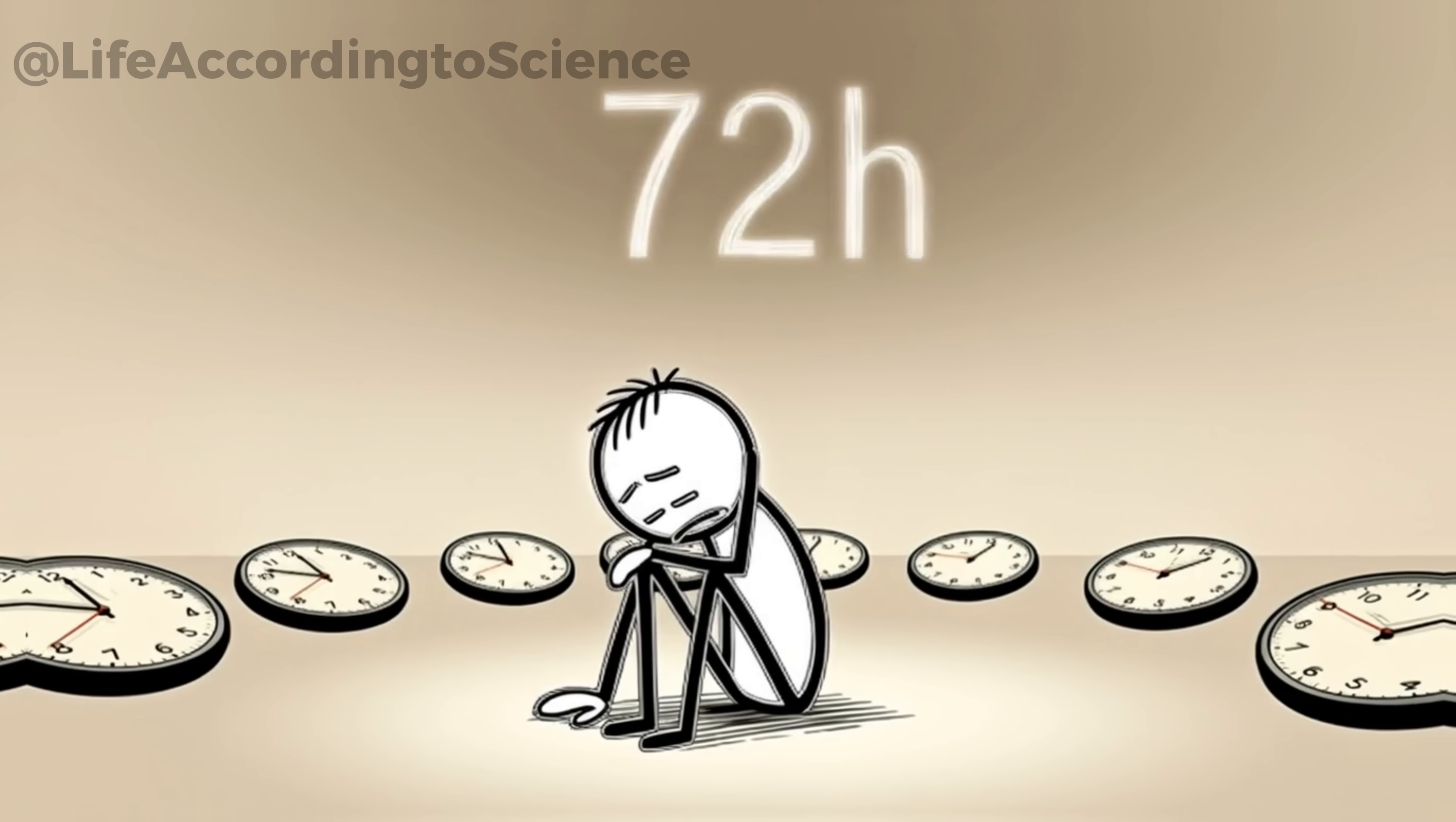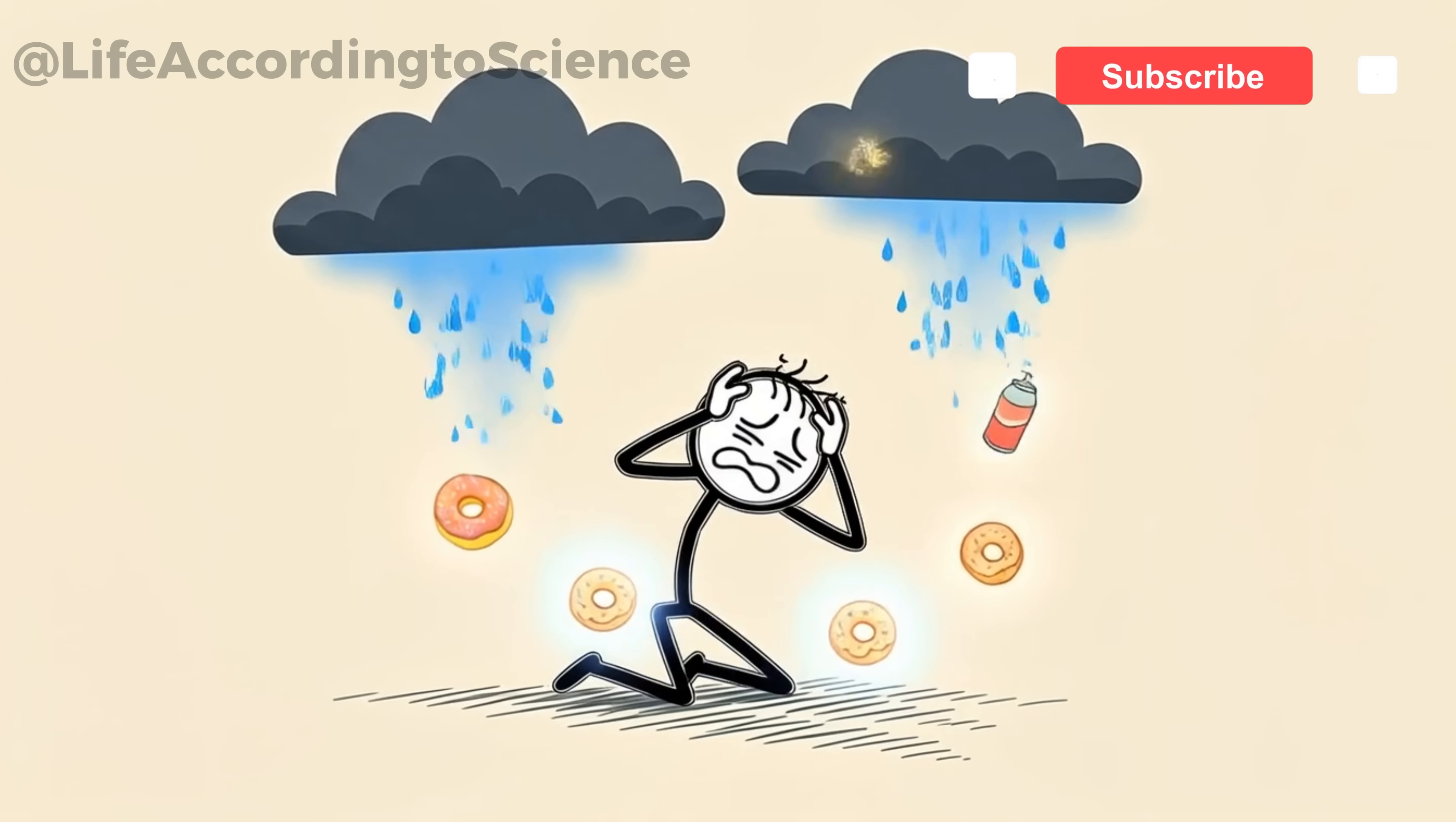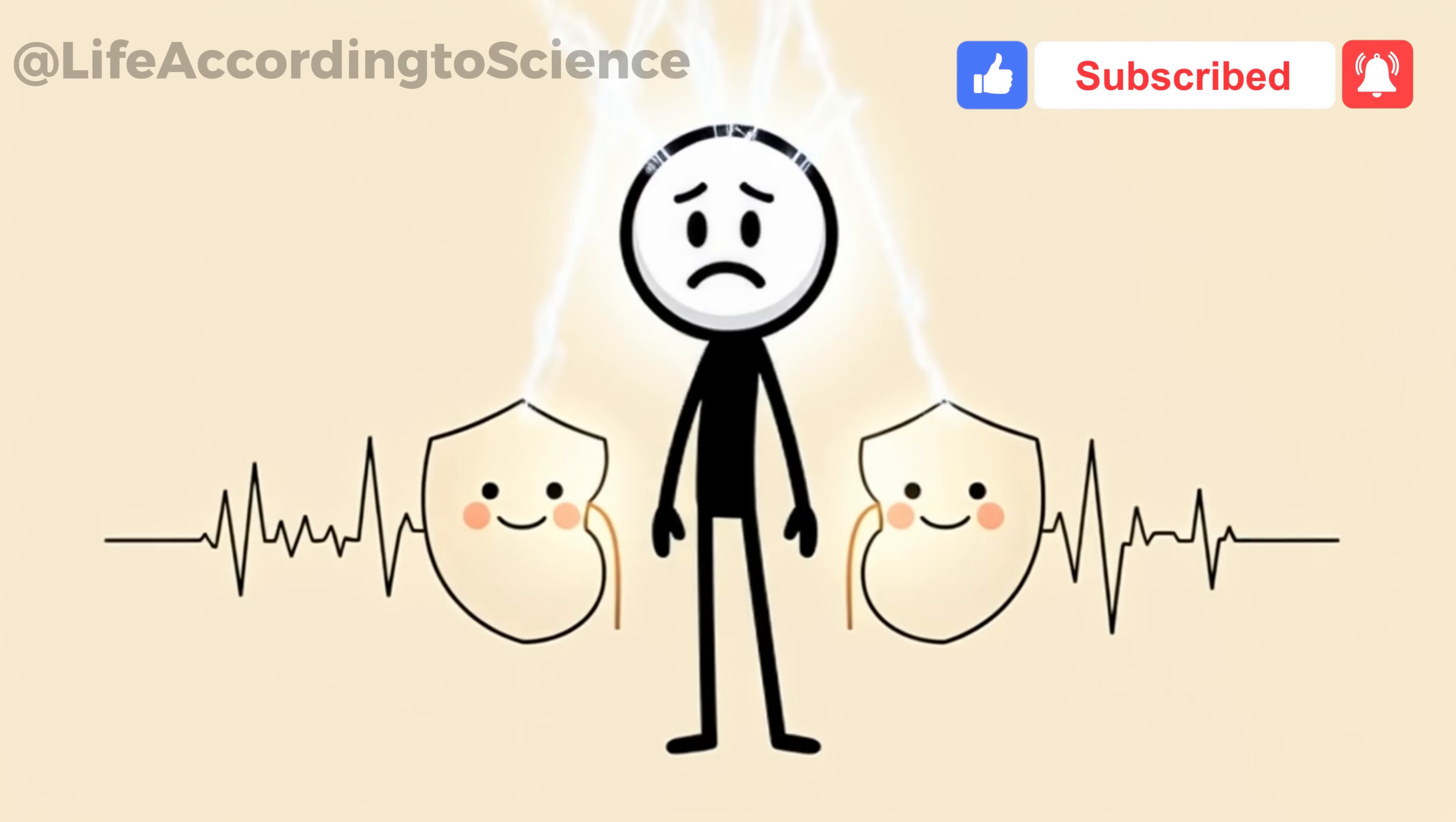The first 72 hours are often the hardest. Many people experience headaches, mood swings, and cravings because the brain is suddenly deprived of its favorite quick fuel, glucose spikes from sugar. But while your brain complains, your kidneys are quietly celebrating.